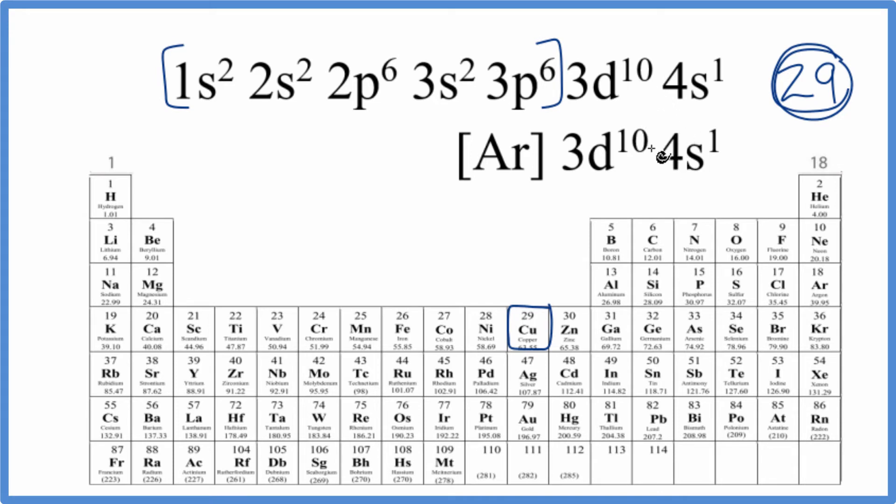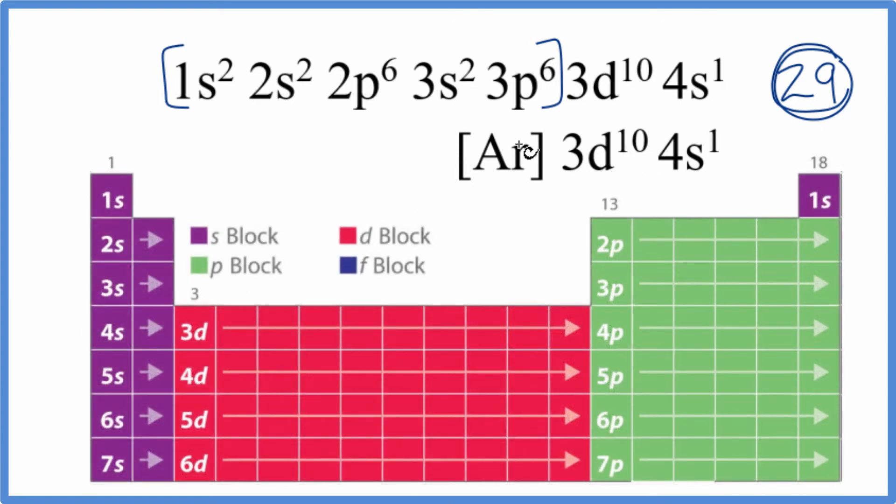Let's take a look at the periodic table broken up into element blocks. So if we look for these last electrons here, these are the valence electrons for copper outside our noble gas core here, we could look at the periodic table.